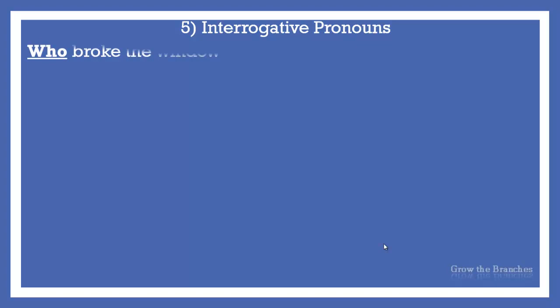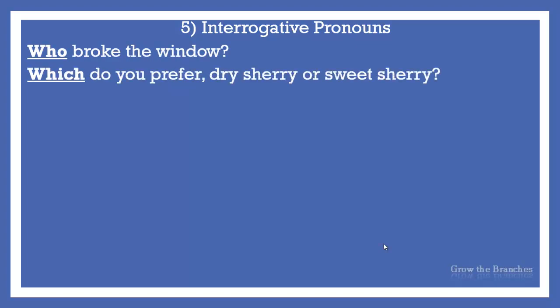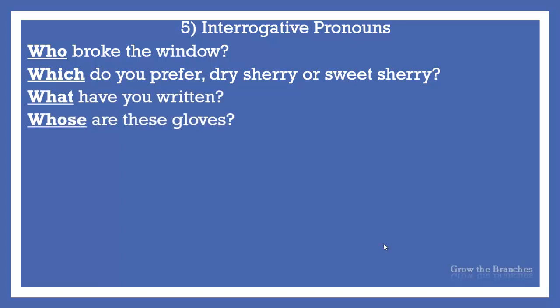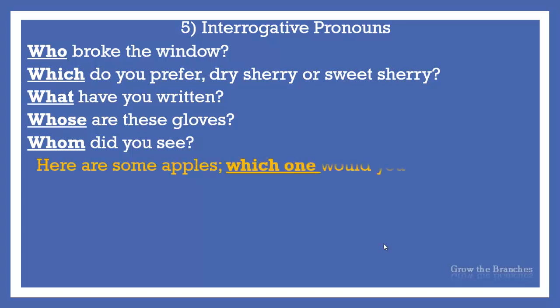Examples: Who broke the window? Which do you prefer — dry sherry or sweet sherry? What have you written? Whose are these gloves? Whom did you see? In these sentences we have used interrogative pronouns and not interrogative adjectives. As you can see, all of them do not precede any noun.